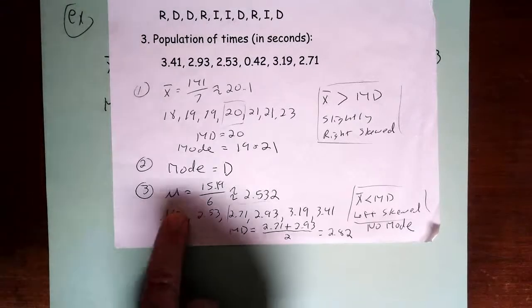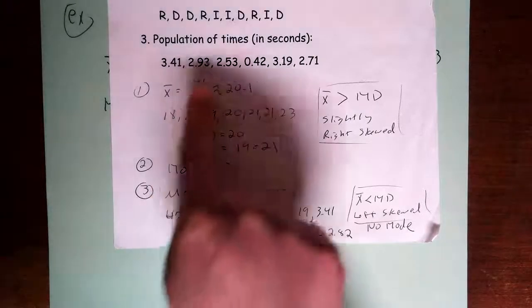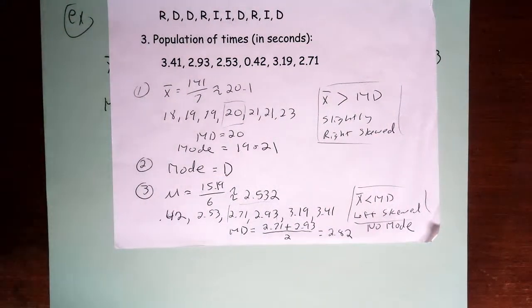and this is a population mean. And then I add all the times up, I get 15.19 divided by 6, and then I'm going to round to three decimal places, and it ends up being 2.253.